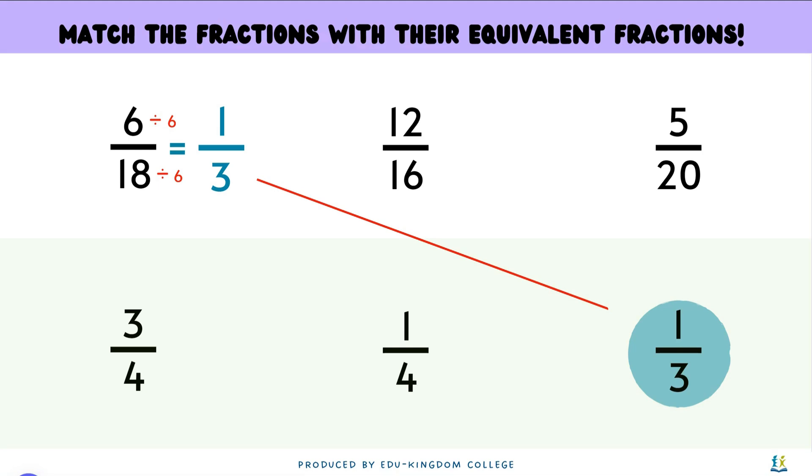For the middle one here, 12 over 16. Both numbers are even numbers, so we can divide both by 2. 12 divided by 2 is going to give 6 and then 16 divided by 2 is going to give 8. Therefore, 12 over 16 is going to be 6 over 8.